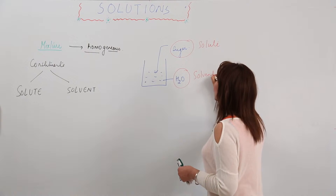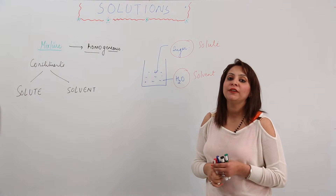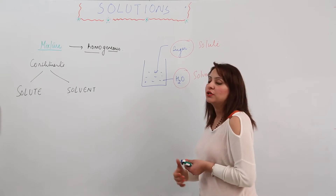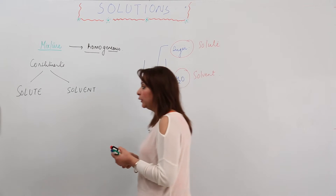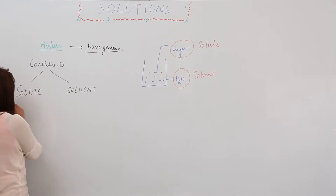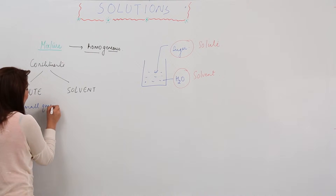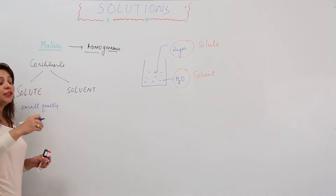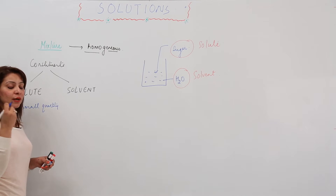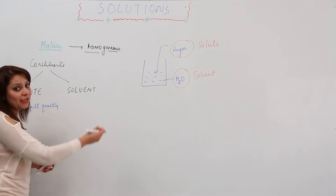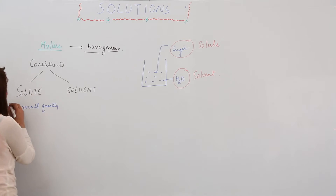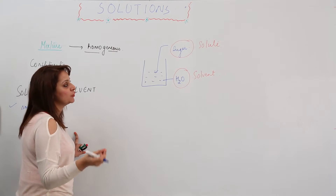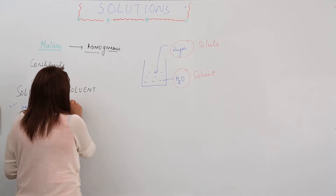The question is: what characteristics does sugar fulfill to be called a solute, and what characteristics does water fulfill to be called a solvent? The solute is the component present in a smaller amount compared to the other. Here, we are taking a large volume of water while the sugar added is little by comparison, so sugar acts as the solute. The solvent is the component present in large quantity.